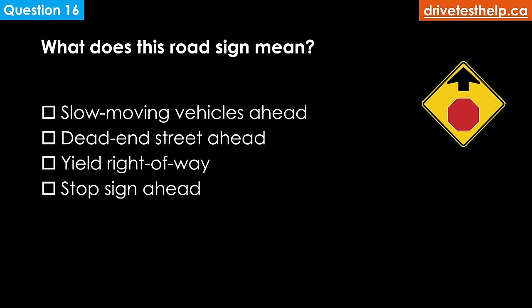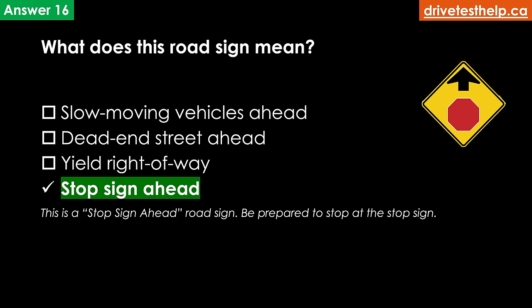What does this road sign mean? Options: slow moving vehicles ahead; dead end street ahead; yield right of way; stop sign ahead. The correct answer is stop sign ahead. This is a stop sign ahead road sign — be prepared to stop at the stop sign.